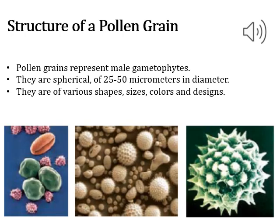Pollen grains represent the male gametophyte and help in the production of male gametes. Pollen grains are 25 to 50 micrometers in diameter and usually vary in their size, color, shape, and design.